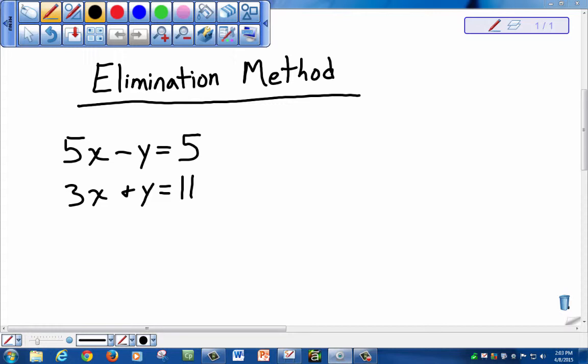So let's take a look at our first problem. We have two equations: 5x minus y equals 5, and the second one is 3x plus y equals 11. Now if you stop and look at them both, you can draw a line across here and you'll add them up. The sum of both equations actually cancels out the y here. You have a negative y and a positive y.